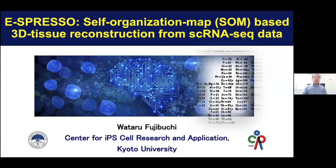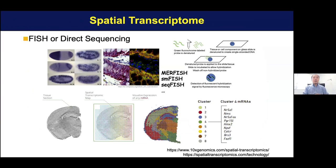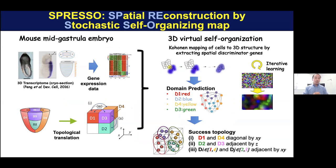As many of you already know, we need a special transcriptomic form for identifying the locations of each cell in our body. So far, many experimental methods have been proposed. However, these methods are all for experimental people — I'm a biophysicist and can use them — but they are at a very early stage and the cost is high. So alternatively, our aim is actually different: without using these methods, we try to reconstruct 3D structures from only scRNA-seq data.